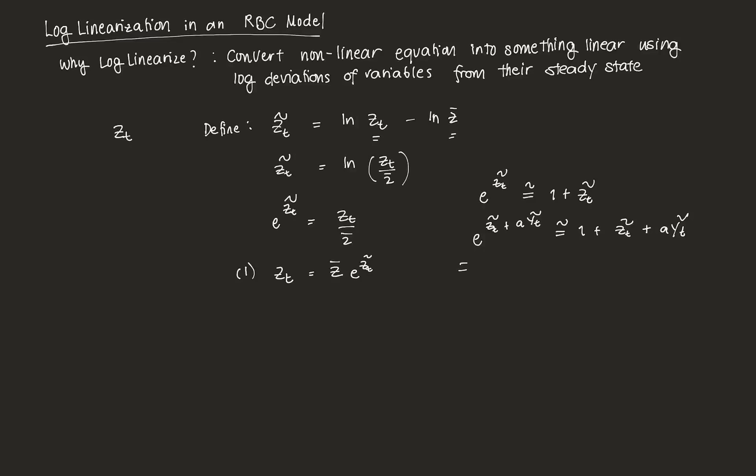Take the expected value of A times e to the Z_{T+1}. So say this is in the future, right? This is just the same as, by just applying properties of expected value, that's just A. So we take out the constant, we factor it out, 1 plus expected value Z_{T+1} tilde.